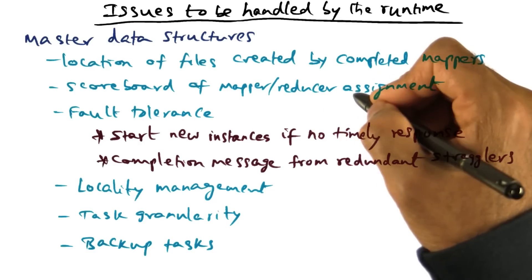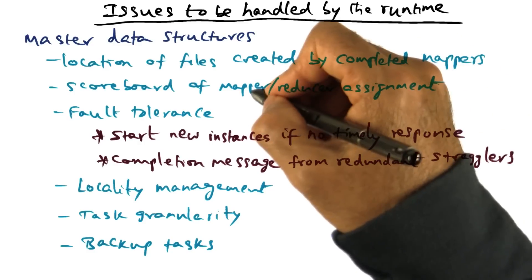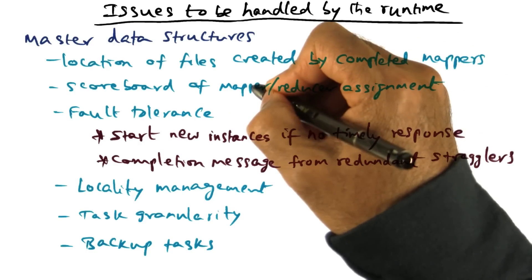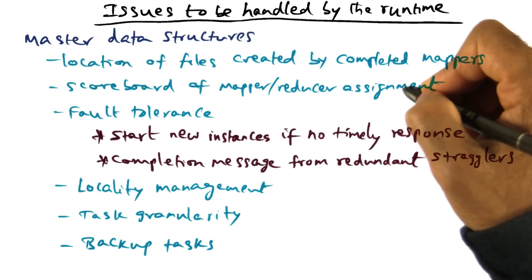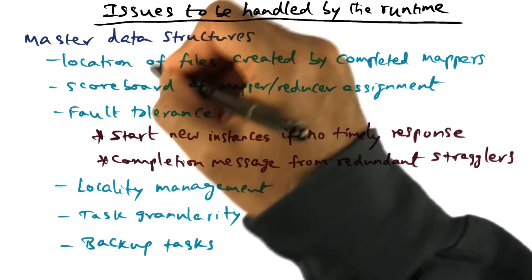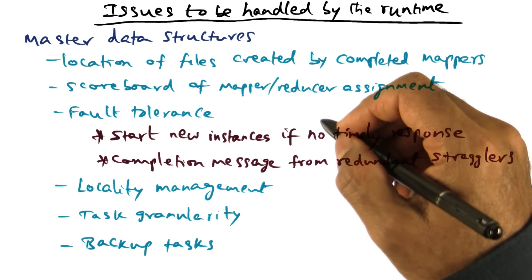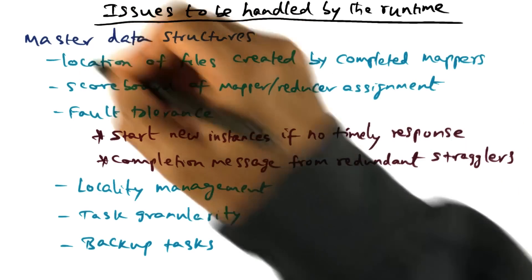And therefore the scoreboard is saying, at any point of time, who are all the workers carrying out mapper functions, who are all the workers carrying out the reducer functions, when are they done, and when they are done, how should I reassign that worker to a new task? So these are the kinds of things that the master data structures facilitate the master to do.